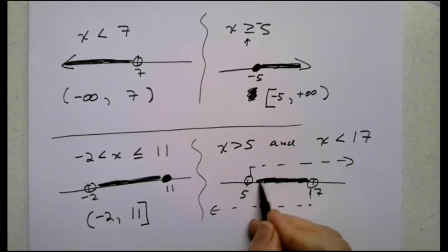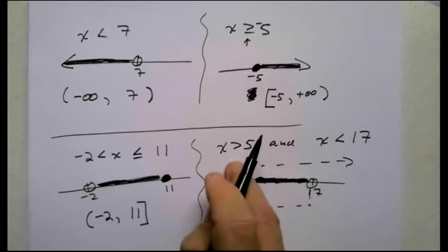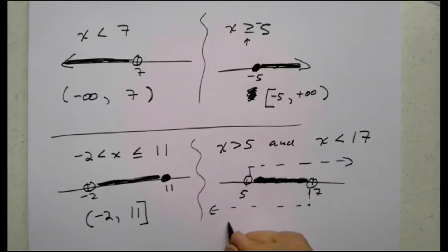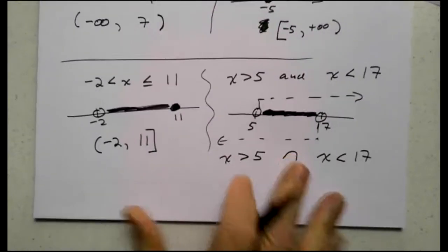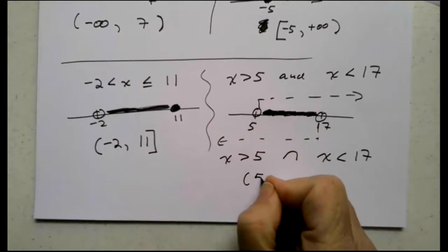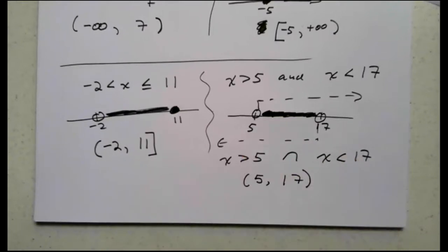And either the first is true or the second is true or both are true. Is or, excuse me, and both have to be true simultaneously at the same time. This is true and this is true. Intersection of the two sets, right? This is the same as saying x is greater than 5, intersect x is less than 17. What does that give me? That gives me this region which is round bracket 5, round bracket 17 and. First is true and the second is true.